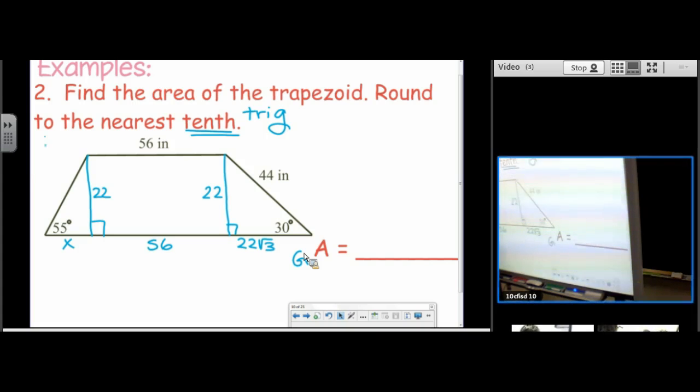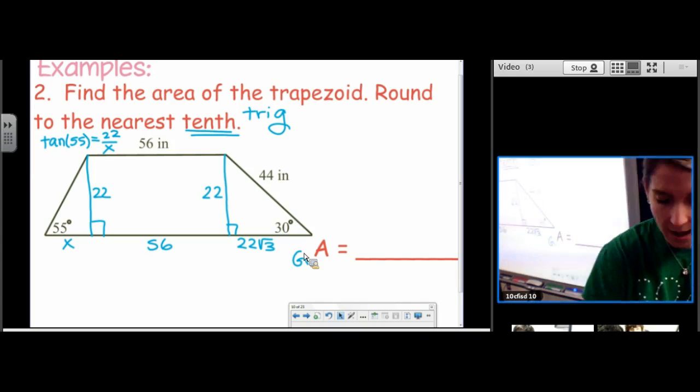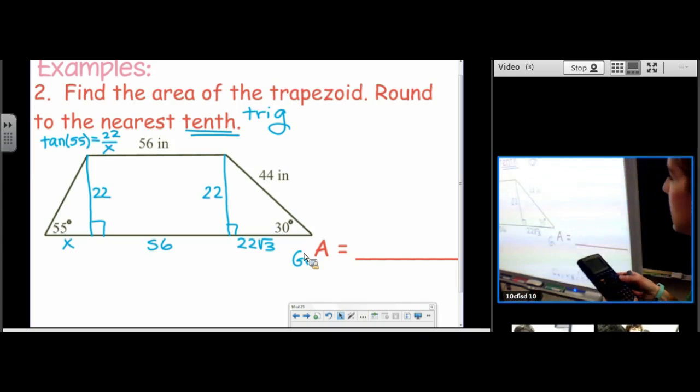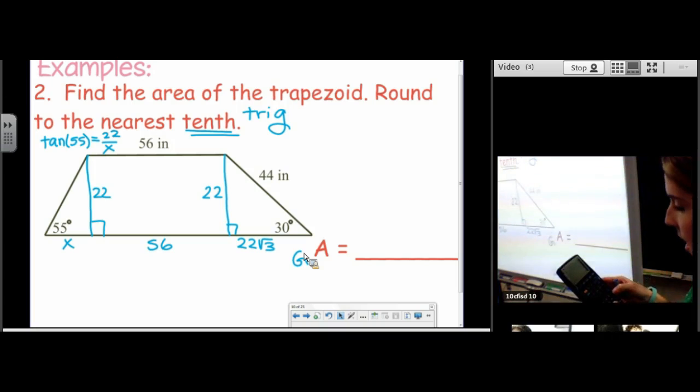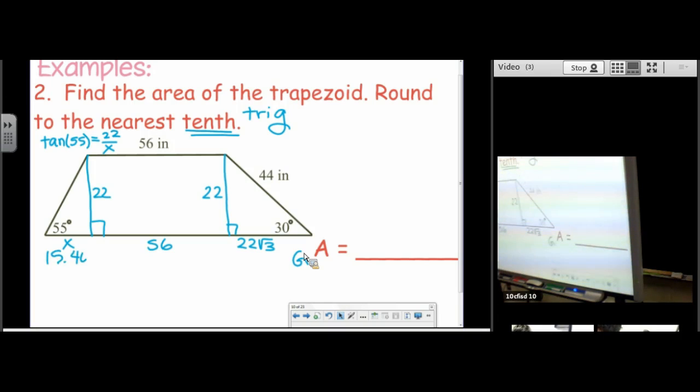Tan of 55 equals opposite over adjacent. We're not going to round yet, so don't round what you get to the nearest tenth. Denominator divide. 22 divided by tan, 55. And I'm going to leave more decimal places than we need.